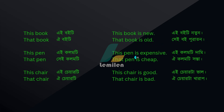This pen is — 'A column T' — expensive — 'manne dami.' This pen is expensive: 'A column T dami.' That pen is — 'OI column T' — cheap — 'manne sosta.' That pen is cheap: 'OI column T sosta.'